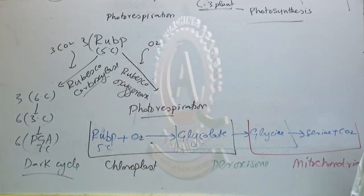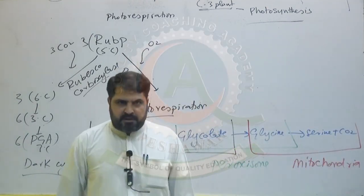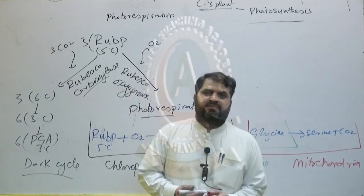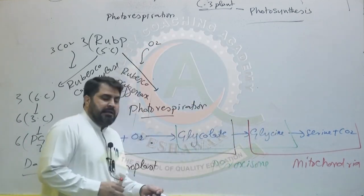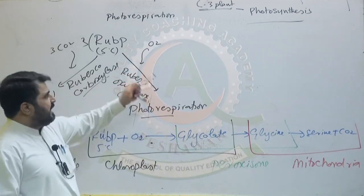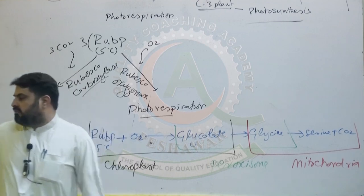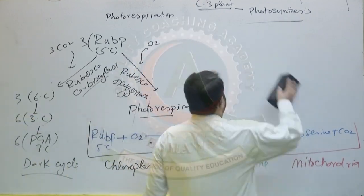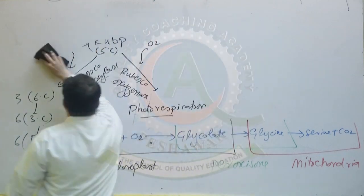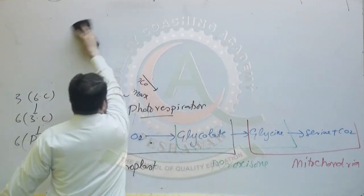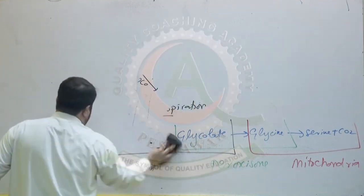Three cell organelles are involved in photorespiration: chloroplast, peroxisome, and mitochondria. Photorespiration is a photosynthesis-hampering process that reduces the productivity of the plant. Photorespiration only occurs in C3 plants — those plants in which the first stable compound is PGA (phosphoglyceric acid) — because in these plants the RuBisCO enzyme is sensitive to both oxygen and carbon dioxide.